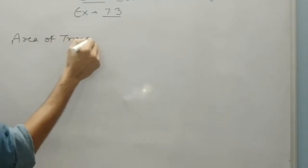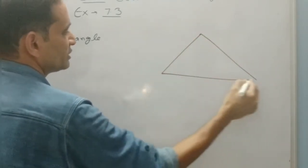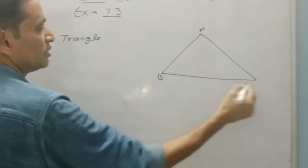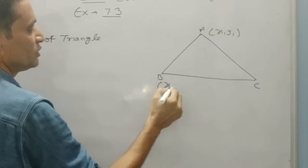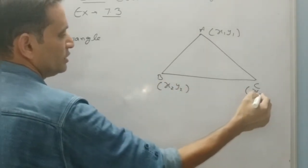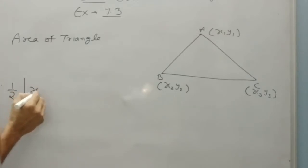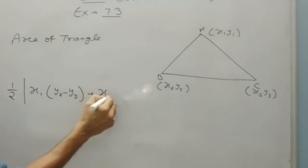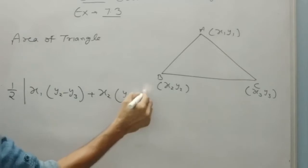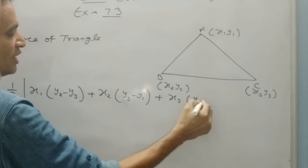By the coordinate formula. Suppose there are 3 points, the vertices are A, B, C having the coordinates x1, y1, x2, y2 and x3, y3. Then the area of triangle will be half of x1(y2 minus y3) plus x2(y3 minus y1) plus x3(y1 minus y2).